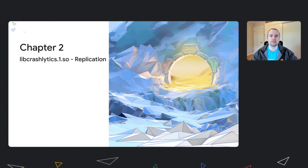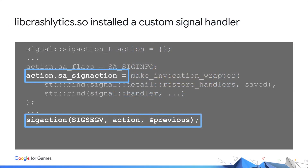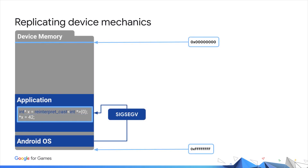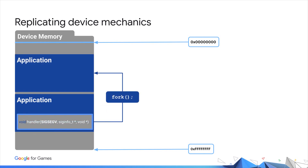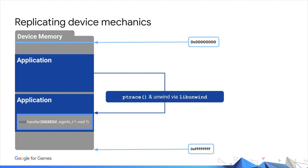In the very first implementation of the Crashlytics NDK SDK, we tried to replicate exactly what the device does. We installed our own signal handler, and at crash time it unwound the stacks, generated a report, and sent that report to our backend for processing and analysis. After a signal was delivered to the application, our signal handler kicked in, forked the process for the purpose of ptracing it, then used libunwind or libcorkscrew to unwind the stacks. Since unwinding was happening at crash time, we took advantage of DLAddr in order to symbolicate the unwound stacks — a nice consequence being symbolicated system symbols.